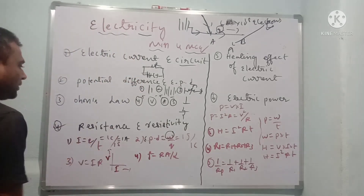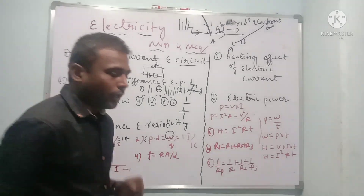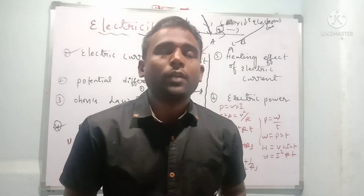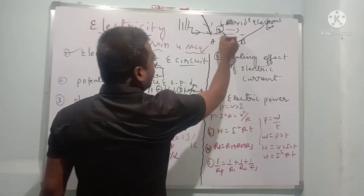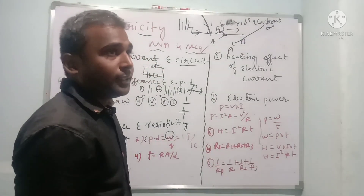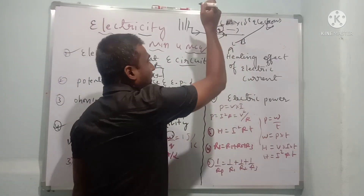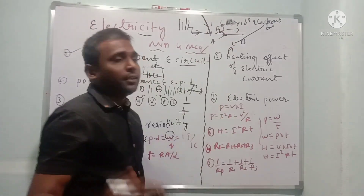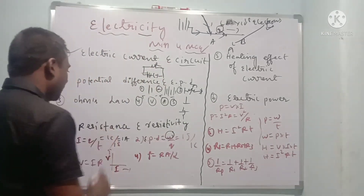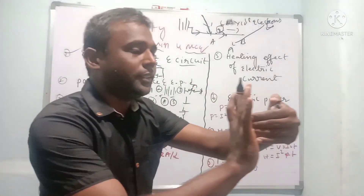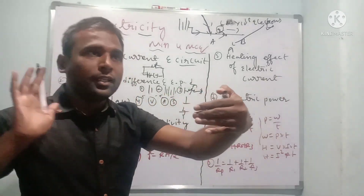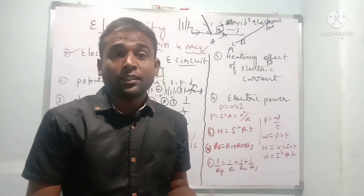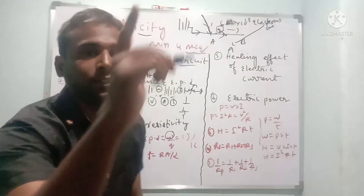Coming to resistance and resistivity. In a metal there are positive ions present in the atom, and there will be a collision between these positive ions and electrons. Due to this collision there is an opposition to the force — that is called resistance. It means the opposition to the flow of electric current is called resistance. Resistivity is the amount of change of resistance per unit area per unit length, and it is independent of length.